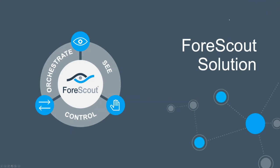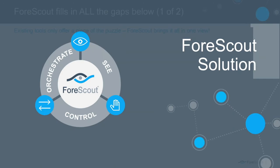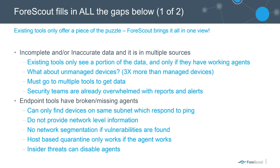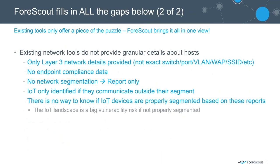For those not familiar with ForScout, there are three components: See, Control, and Orchestrate. ForScout is here as a security framework to fill in all the gaps found in these architectures. We've noticed a lot of incomplete and inaccurate data from multiple sources because existing tools only see a portion of the data — they rely on agents or scanners to do scheduled scans. We want to make sure we cover all these gaps, as well as fix any missing or broken agents so that the tools you've already invested in will actually work the way they need to.